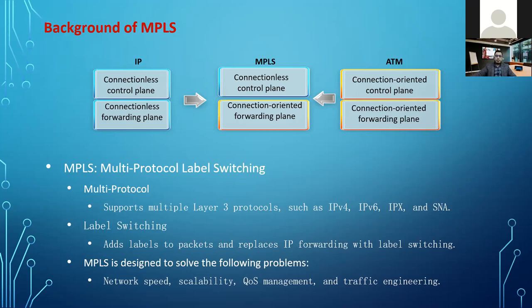Label switching adds labels to the packet and replaces IP forwarding. If it is receiving IP traffic, it will assign labels and replace the IP forwarding — the forwarding in MPLS is based on labels. Other problem solutions in MPLS include high network speed, scalability, QoS and traffic engineering. The traffic engineering means the user can control different paths of traffic — you can configure it, you can reroute it. The user has different rights to engineer the transmission path.